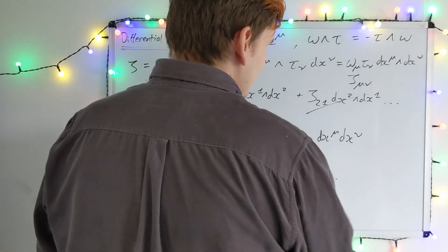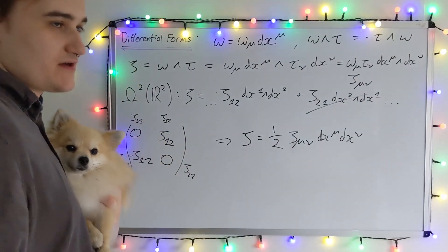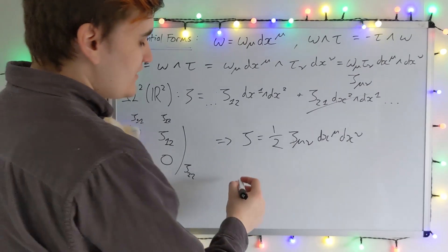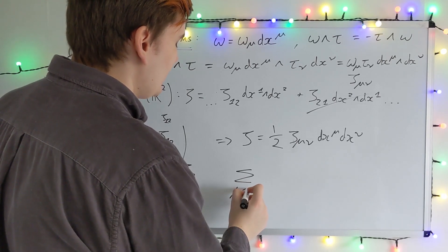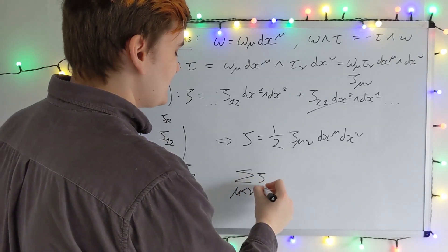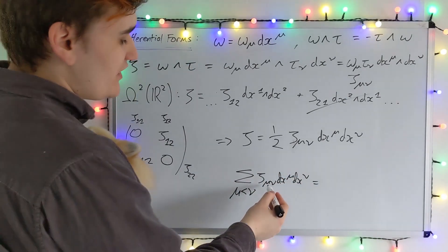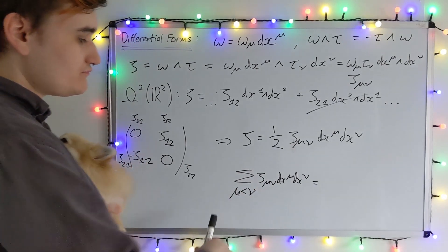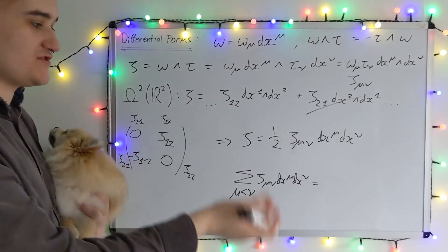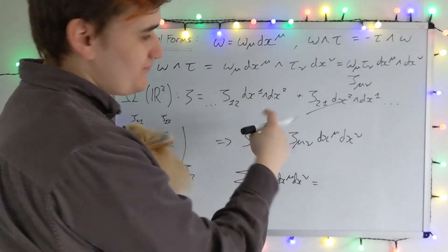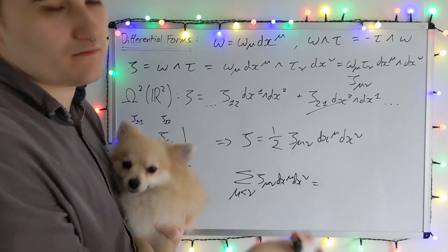We could also, instead of just writing this factor to account for the over-counting, we could just kind of modify our sum convention a little bit, and say that rather than summing over mu nu, we instead sum over mu less than nu. So if I write an expression here, zeta mu nu, we're summing over mu less than nu, so my index mu always has to be less than nu. The only terms which I could write here are 1, 2. So this just accounts for the over-counting which is introduced by the sum convention, and the fact that when we write dx2 wedge dx1, it's really the same thing as minus dx1 wedge dx2.